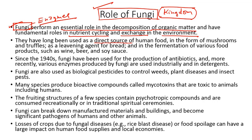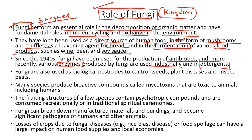Fungi also serves as a direct source of human food, consumed in various forms such as mushrooms and truffles. It is used in the production of bread, and the enzymes produced by fungi are used in fermentation of various food products such as wine, beer and soy sauce. These enzymes are also used in the production of antibiotics and in various industries, especially in the production of detergents. Certain fungi can also be used as biological pesticides to control the growth of weeds, plant diseases and insect pests.